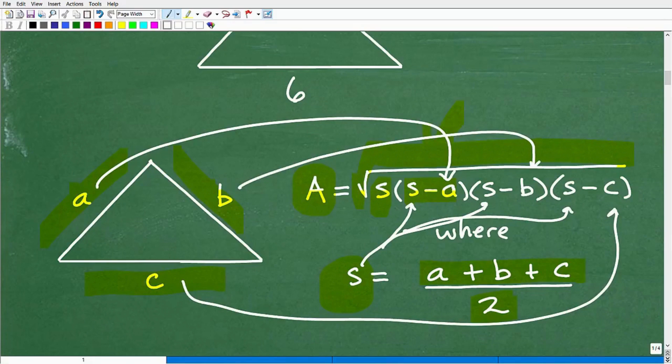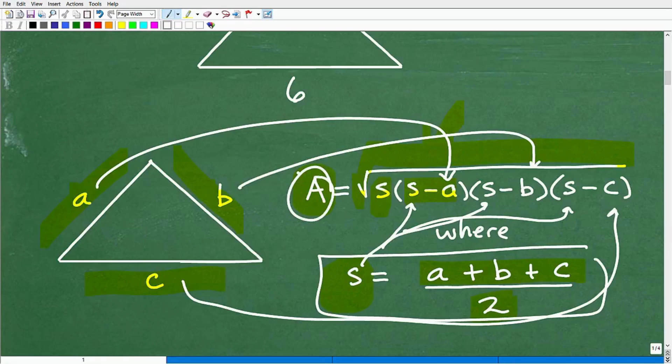Okay. So we just got to basically follow this formula very specifically. Okay. By first calculating S, then plugging in the respective values for these variables and doing the number crunching, and then we'll confine the area. Obviously, having a calculator will be very useful for this exercise.